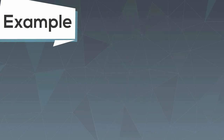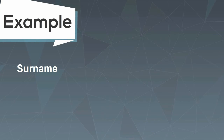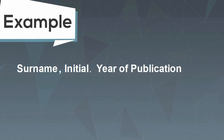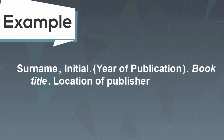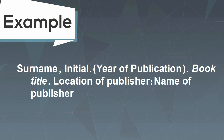Arrange the information in the following order: surname of the author, or authors, a comma, author's initial, or initials, a full stop, followed by the year of publication in brackets, a full stop, the title of the book in italics, the location of publisher — usually a city — a colon, the name of publisher, and finally, a full stop.